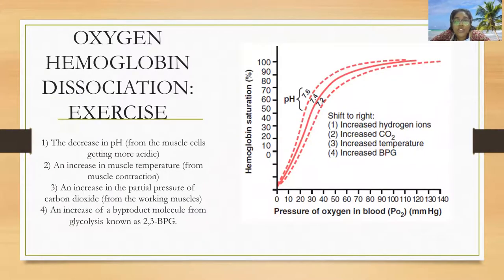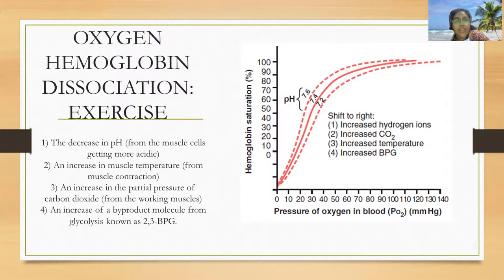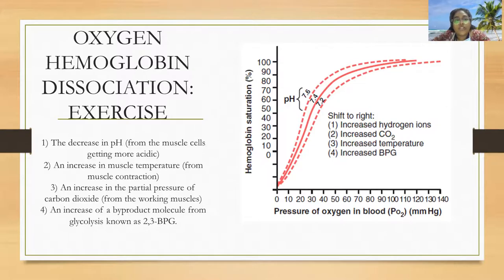The oxygen-hemoglobin dissociation curve shifts during exercise. During exercise, there is a decrease in pH caused by lactic acid secreted from muscle cells. There is also an increase in muscle temperature during muscle contraction, an increase in partial pressure of carbon dioxide from working muscles, and an increase in the by-product molecule from glycolysis known as 2,3-BPG. All of these result in a rightward shift of the oxygen dissociation curve, which is why there is increased oxygen supply to the muscles during exercises.